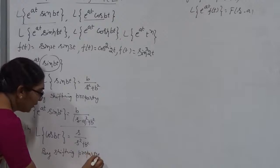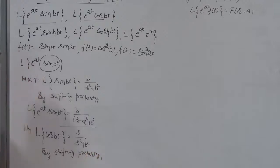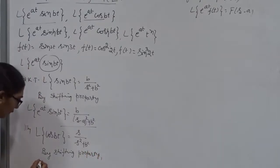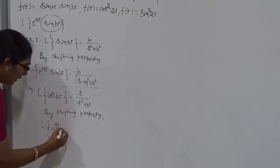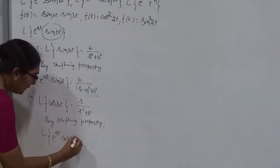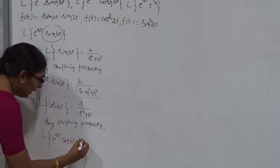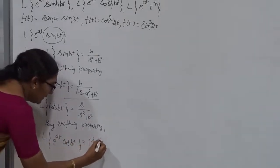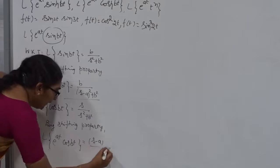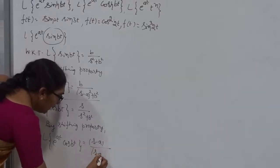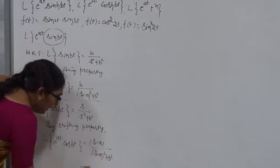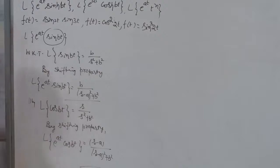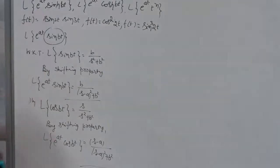Keep in mind: you must and should mention the name of the property before going to apply it. The Laplace Transform of e to the power At into cos Bt is nothing but, replacing s by s minus A, we get (s minus A) divided by (s minus A) squared plus B squared. This is the result for the second function.